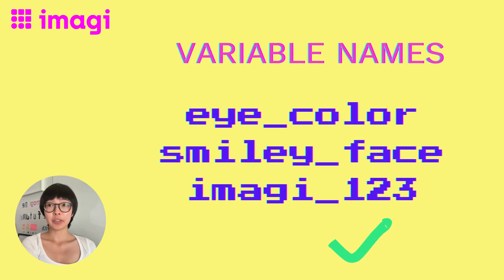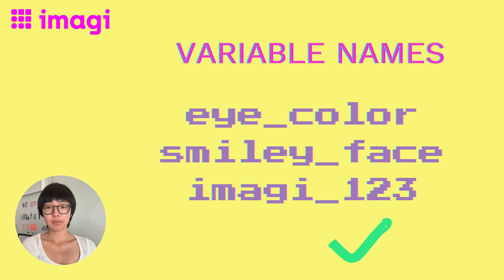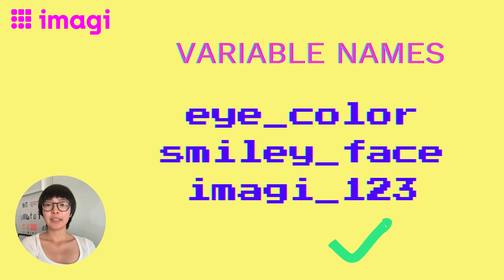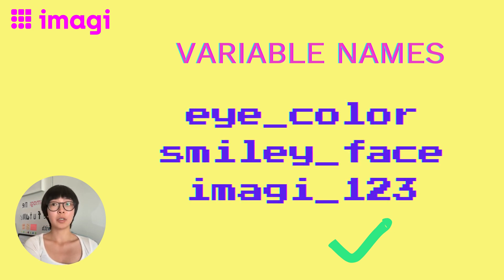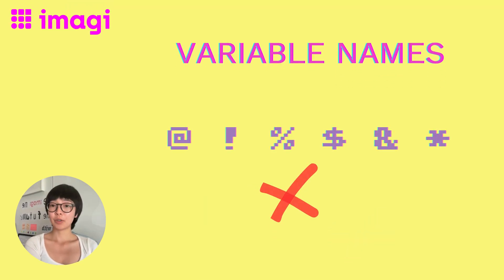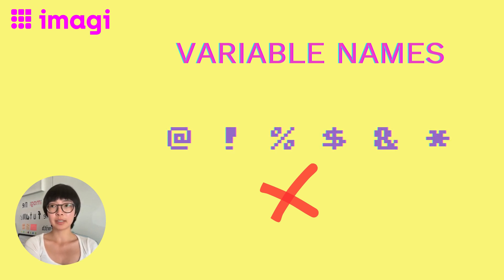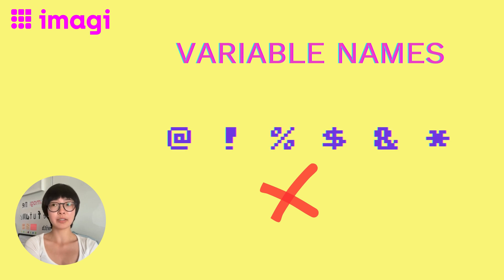Alright, here we go! Let's master the rules for naming variables. Start your variable name with a letter, similar to how we begin sentences. When your variable is a combination of two words, connect them with an underscore — it's as simple as i_color, smiley_face, or imagine_123. You can create a unique blend using letters, numbers, and underscores. But remember, special characters like @, !, or the dollar sign are not allowed. They disrupt the harmony, so it's best to avoid them.